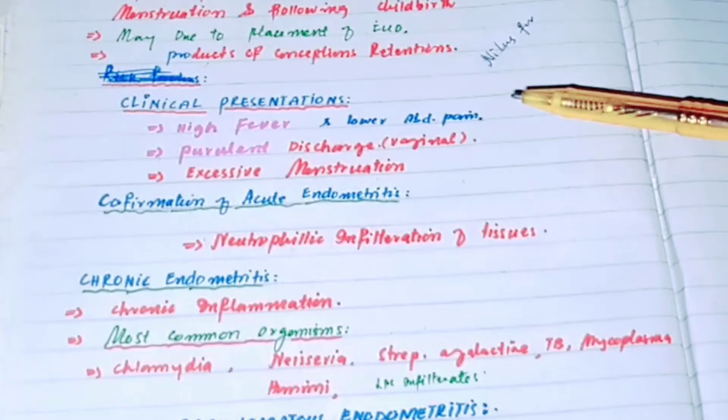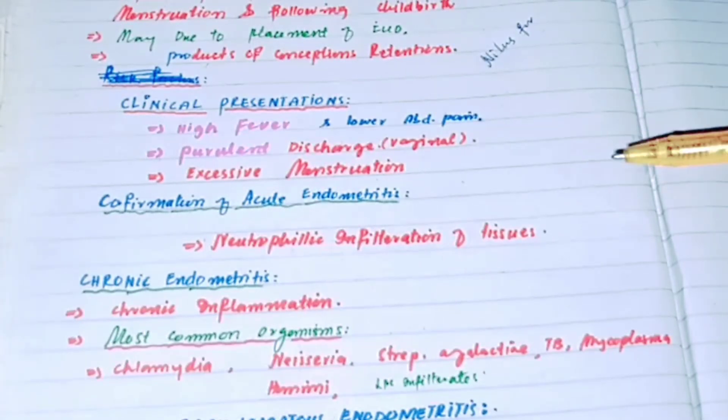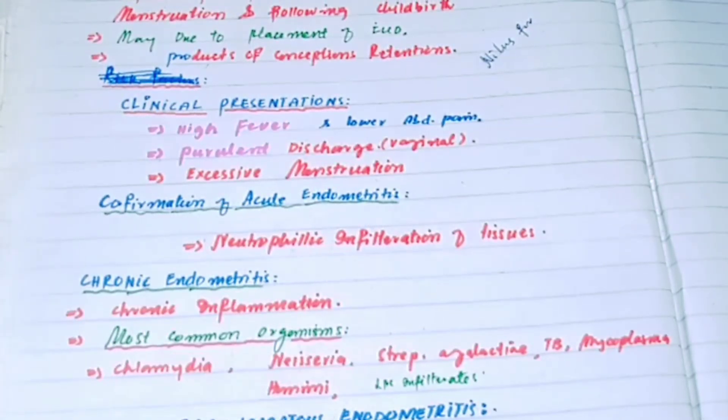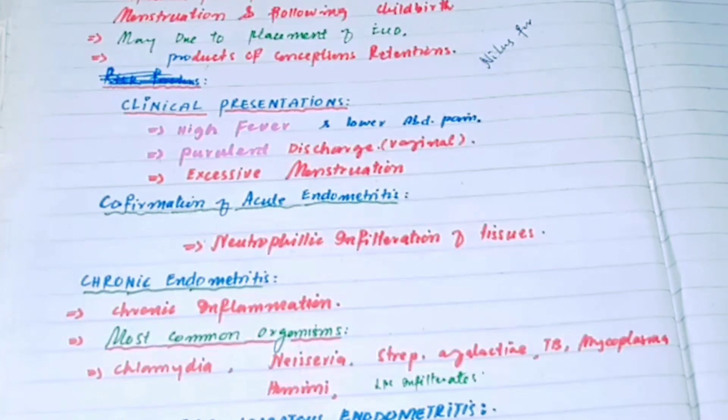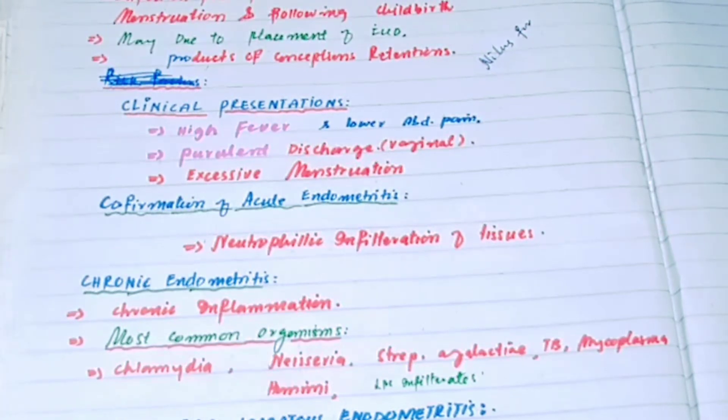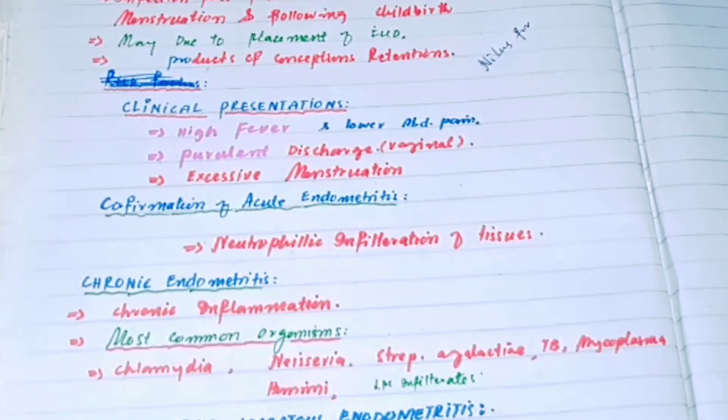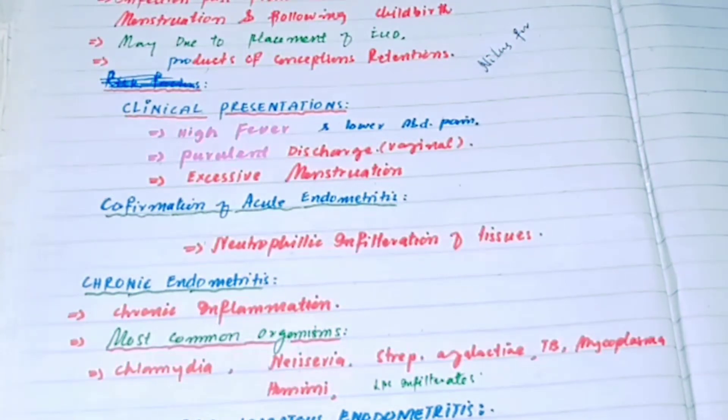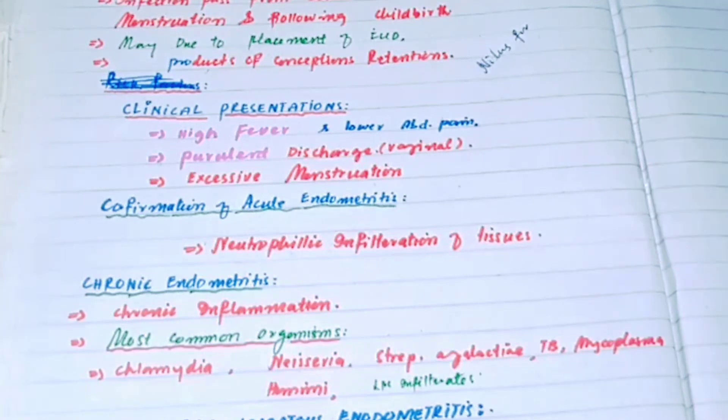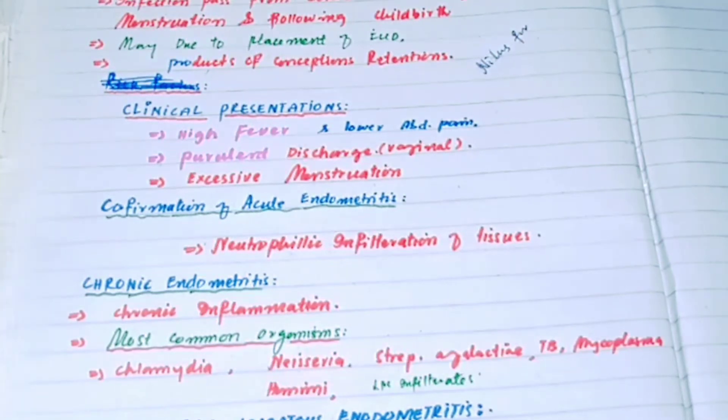How to confirm acute endometriosis? Acute endometriosis can be confirmed by microscopy by seeing the presence of neutrophils. When neutrophils are present on microscopy examination of the endometrial tissue, it will confirm acute endometriosis.